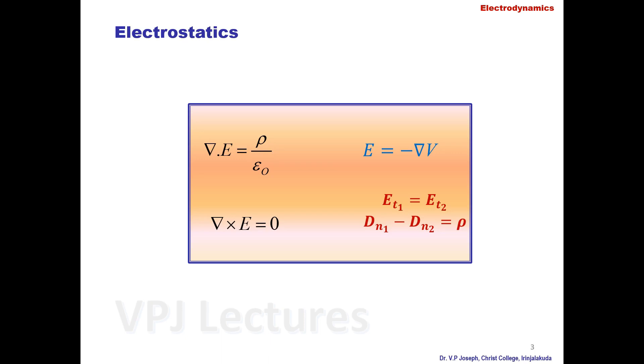The boundary conditions are E_t1 equals E_t2 for tangential components, and D_n1 minus D_n2 equals rho for normal components. Coming to magnetostatics, the source is a steady current — similar to how in electrostatics the source is a static charge and the effect is a static field. In magnetostatics, the source is a steady current and the effect is a static magnetic field. The magnetic field around the steady current can be identified by placing another current element in the field.